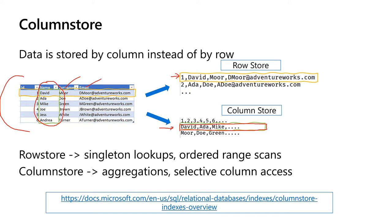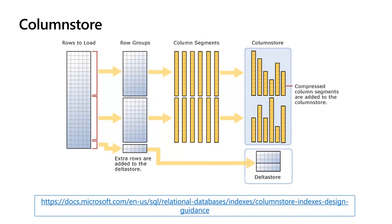Here is a bit more detail on how column store works. All rows in a table are organized into row groups of up to approximately one million rows. Each row group has its own column saved separately in something called a column segment. Each segment is heavily compressed. In a column, especially for data warehousing, you have a lot of duplicate data, and that can be compressed quite a lot, which also helps improve performance. Full architecture and internals are available at the link provided.